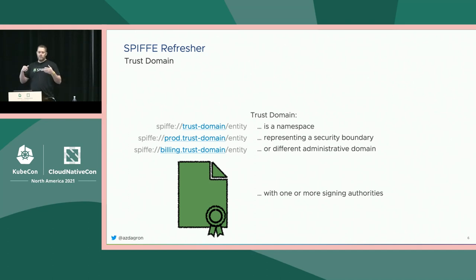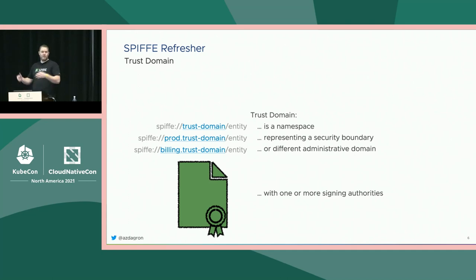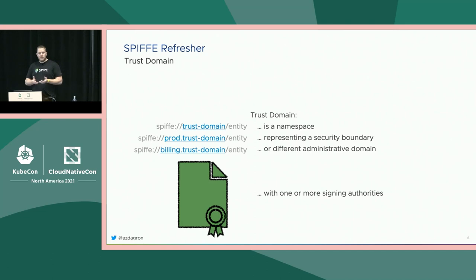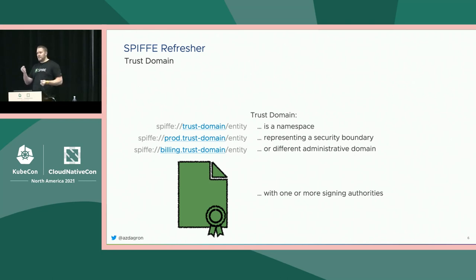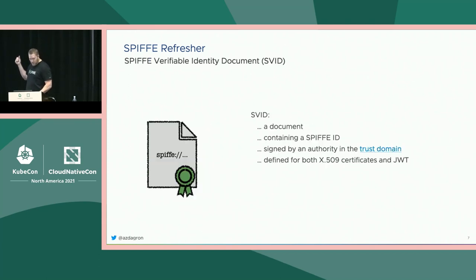You could have a company with a single trust domain, or maybe a trust domain for prod and staging, or a trust domain between business units like banking and HR. The point is that these trust domains form a cryptographic boundary, a security boundary. A trust domain typically has its own PKI or its own set of cryptographic keys that it uses to sign identities within itself. That is what we'll talk about next.